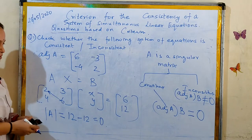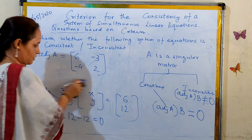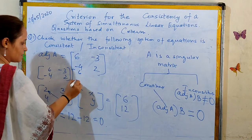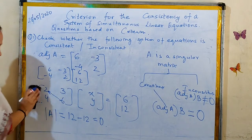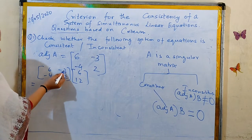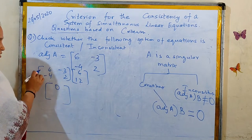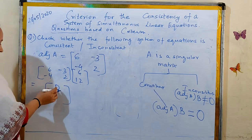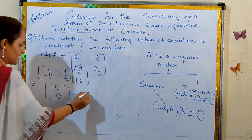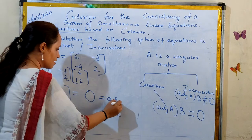After calculating the adjoint of matrix A, we multiply it by matrix B. Computing: 6 into 6 = 36 minus 36 = 0 for the first entry, and minus 4 into 6 = minus 24, plus 24 = 0 for the second entry. The result is a null matrix. So adjoint of A times B is the null matrix.